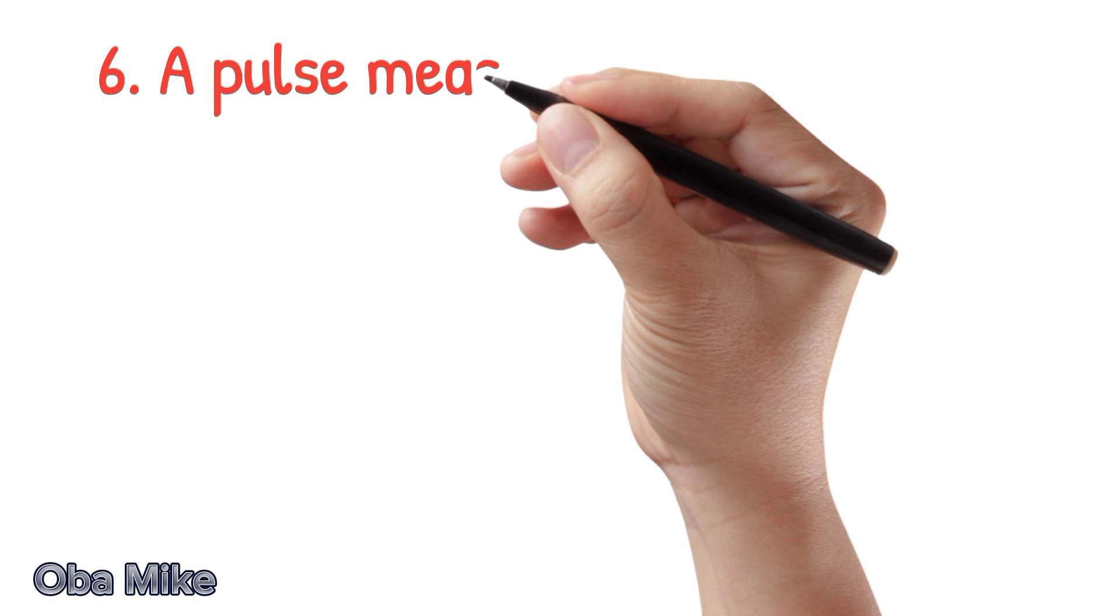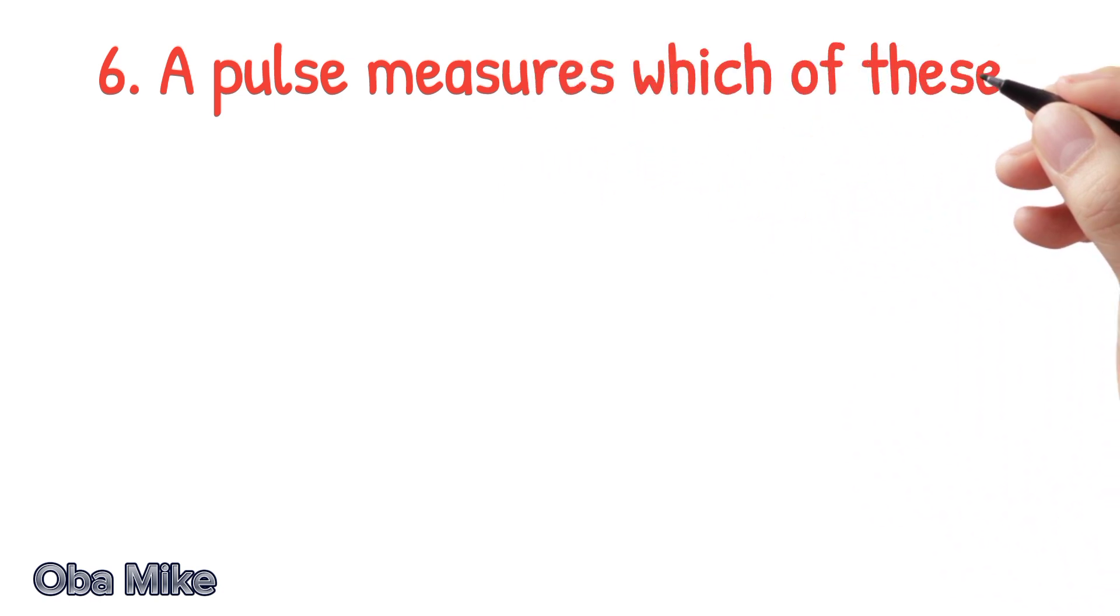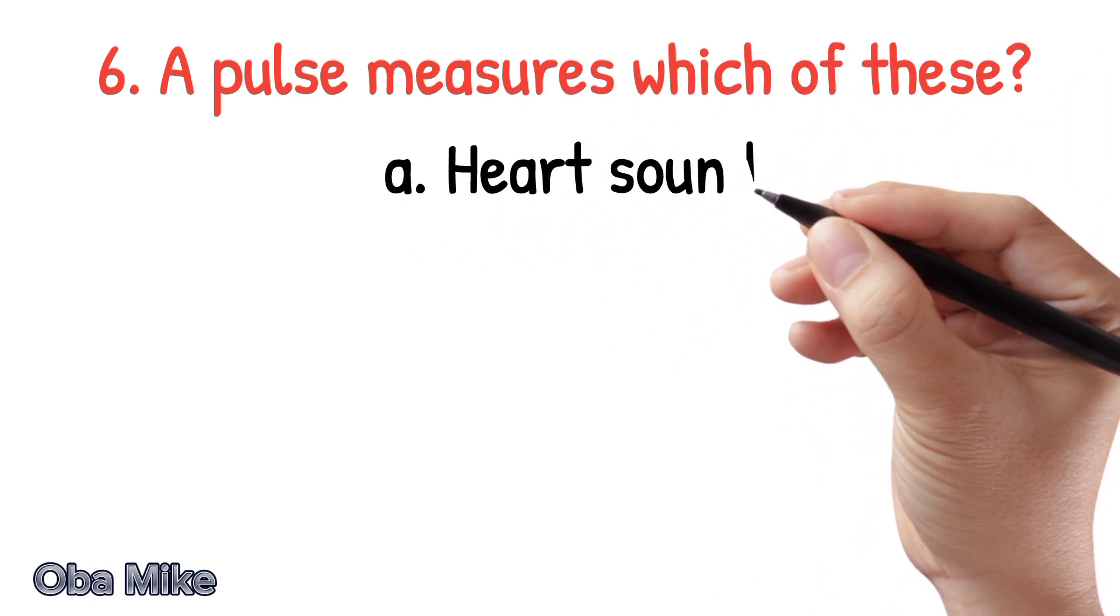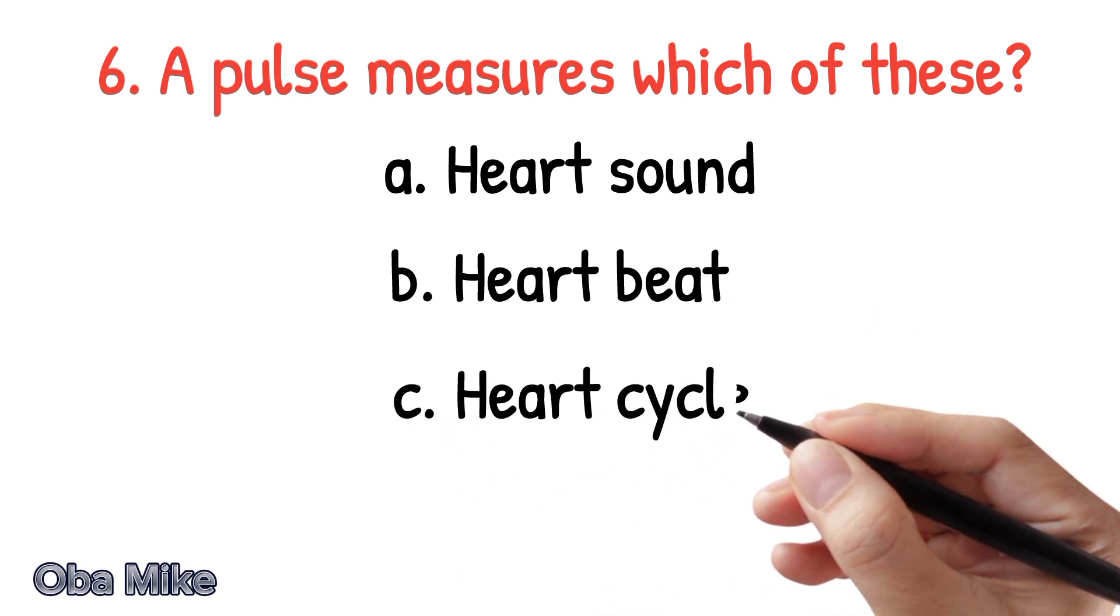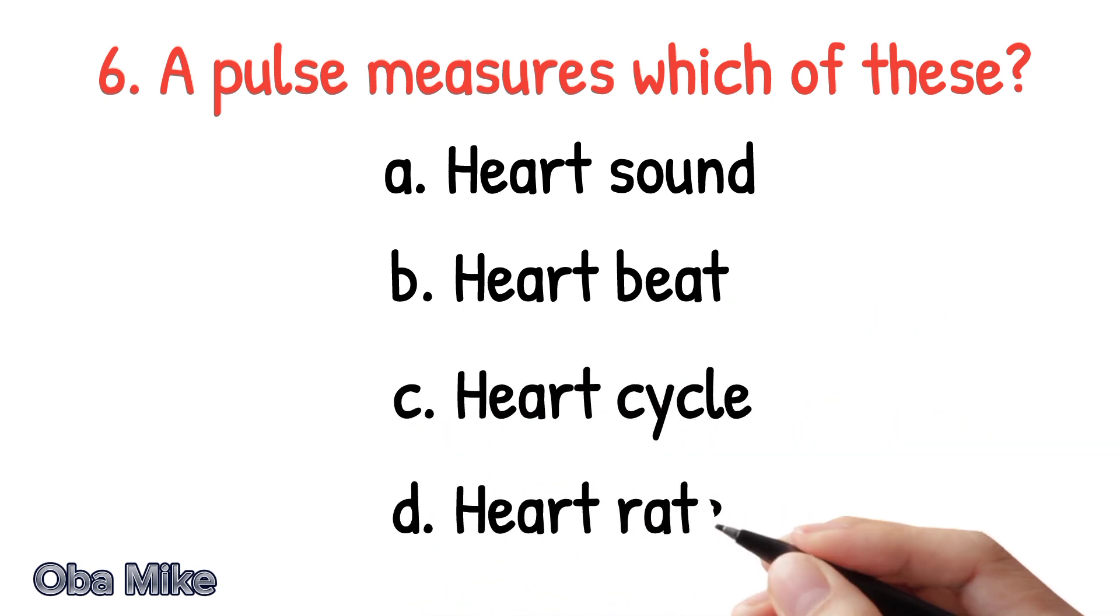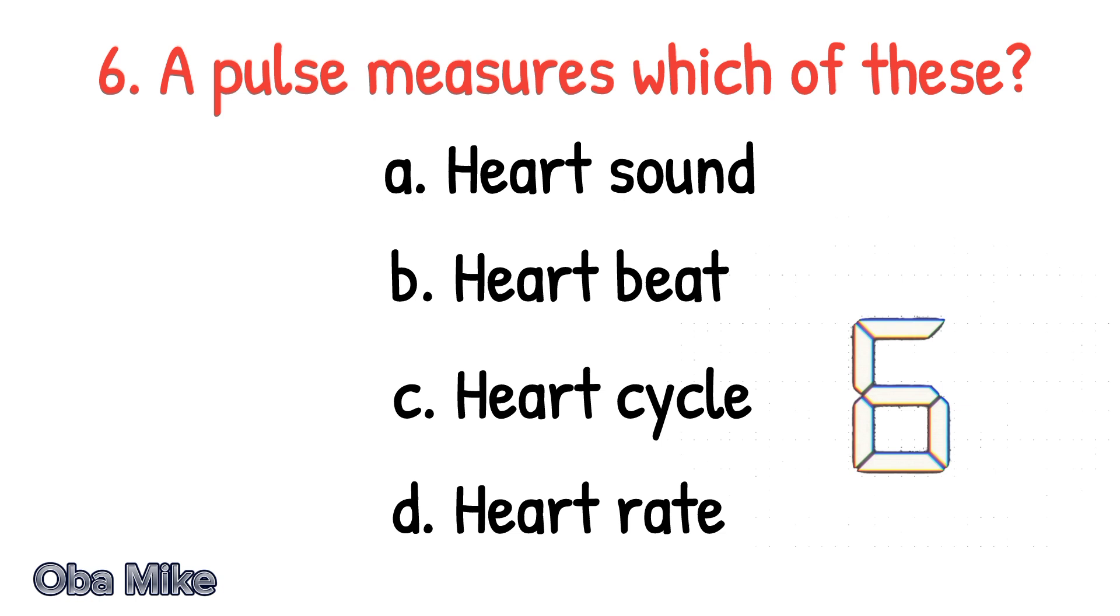Number 6. A pulse measures which of these? A. Heart sound. B. Heart beat. C. Heart cycle. D. Heart rate. The correct answer is D. Heart rate.